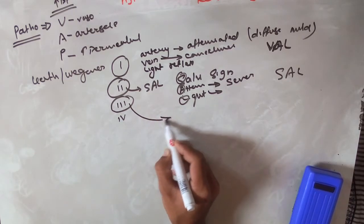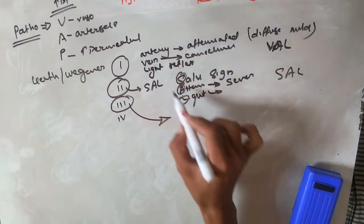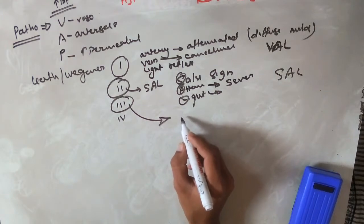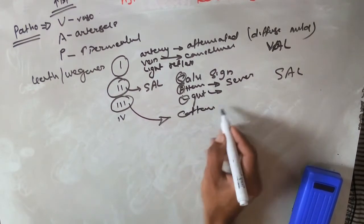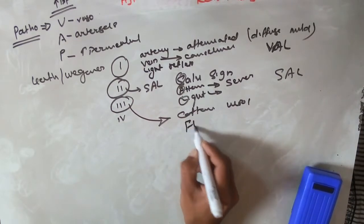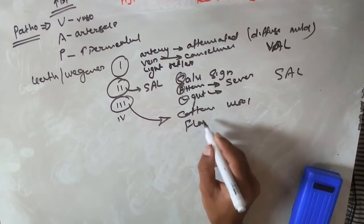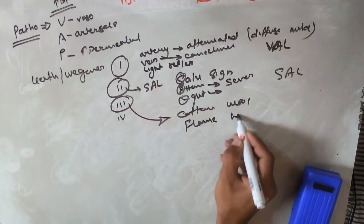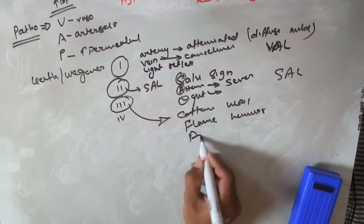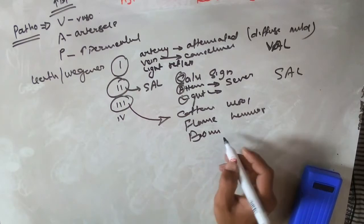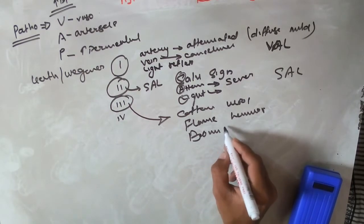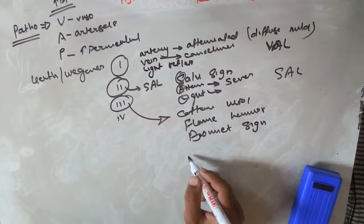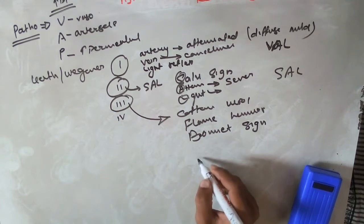Grade three includes all features of the above grades plus additional findings. Cotton wool spots, which are soft exudates, are seen. Flame-shaped hemorrhages are present when superficial arteries or nerve fibers are involved. Bonnet sign is also seen in grade three — Bonnet sign refers to banking of the vein distal to the AV crossing.